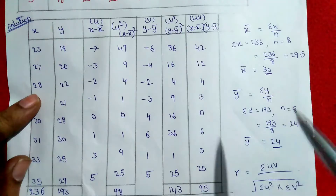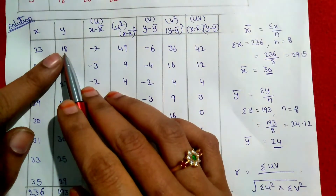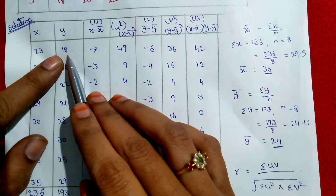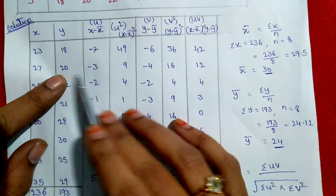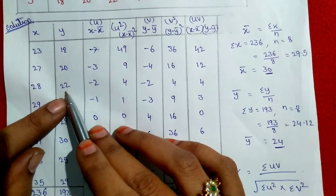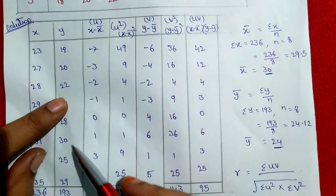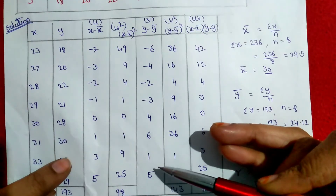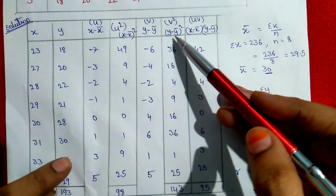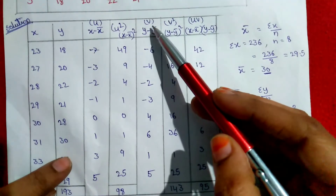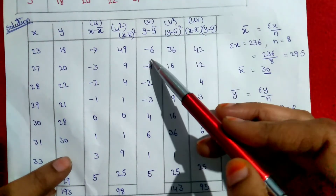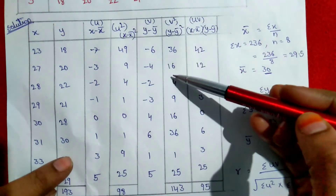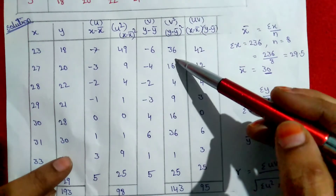Next, we calculate y minus y-bar, denoted v. The y-bar value is 24. So: 18 minus 24 equals minus 6; 20 minus 24 equals minus 4; 22 minus 24 equals minus 2. We compute all y minus y-bar values. Then for v-squared: minus 6 squared is 36; minus 4 squared is 16; and so on for all values.